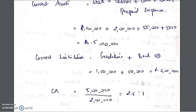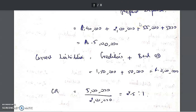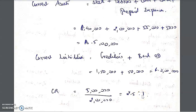Current liabilities are amounts you are liable to pay, such as creditors, bank overdraft, bills payable, and outstanding amounts. In this sum, creditors are 1 lakh 50 thousand and bank OD is 50 thousand, giving total current liabilities of 2 lakh. So the current ratio is 5 lakh divided by 2 lakh, which equals 2.5 is to 1. Ideally the ratio should be 2 is to 1, so this is a fair and good position.